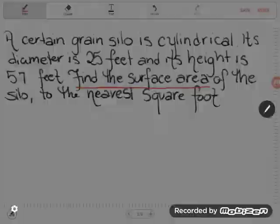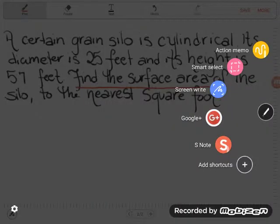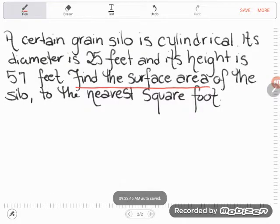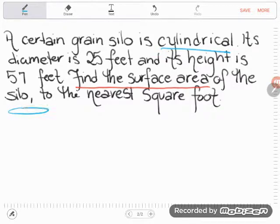Okay, so before we move on, I'd really like to draw a picture here so we can look at what's going on here. So we said this grain silo is cylindrical. It's cylindrical. What does that mean? It means it's shaped like a cylinder.